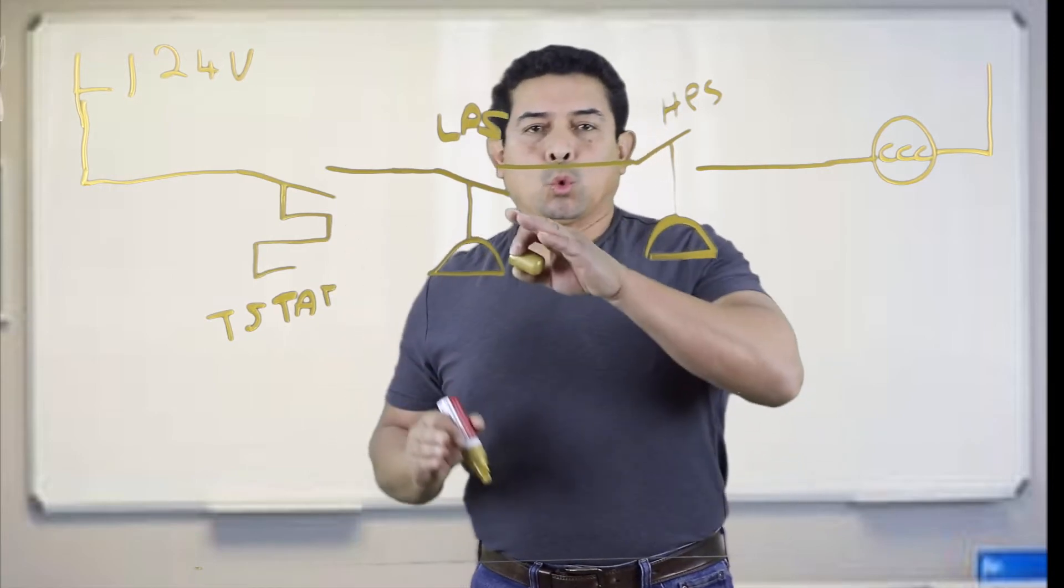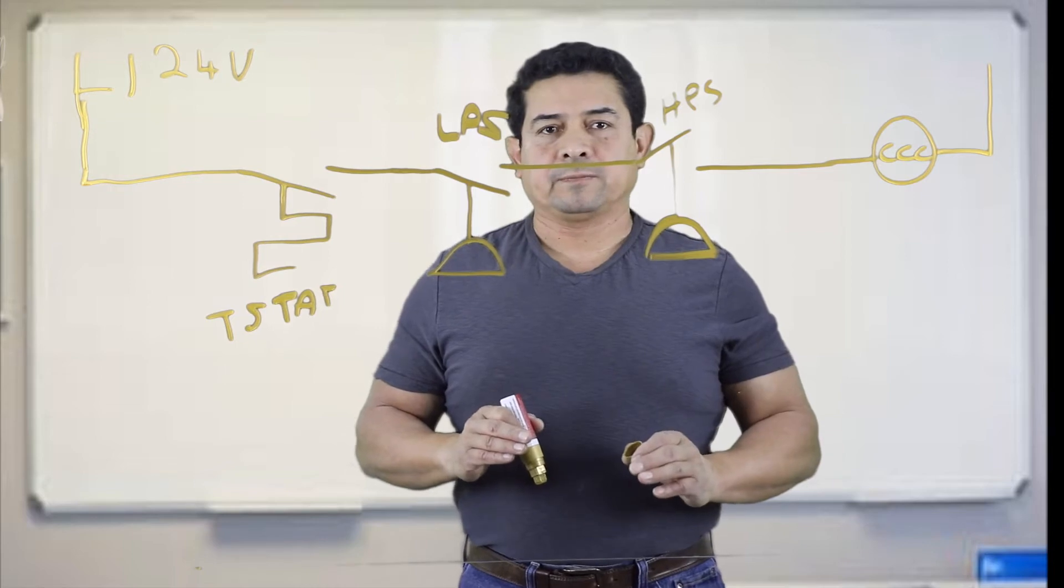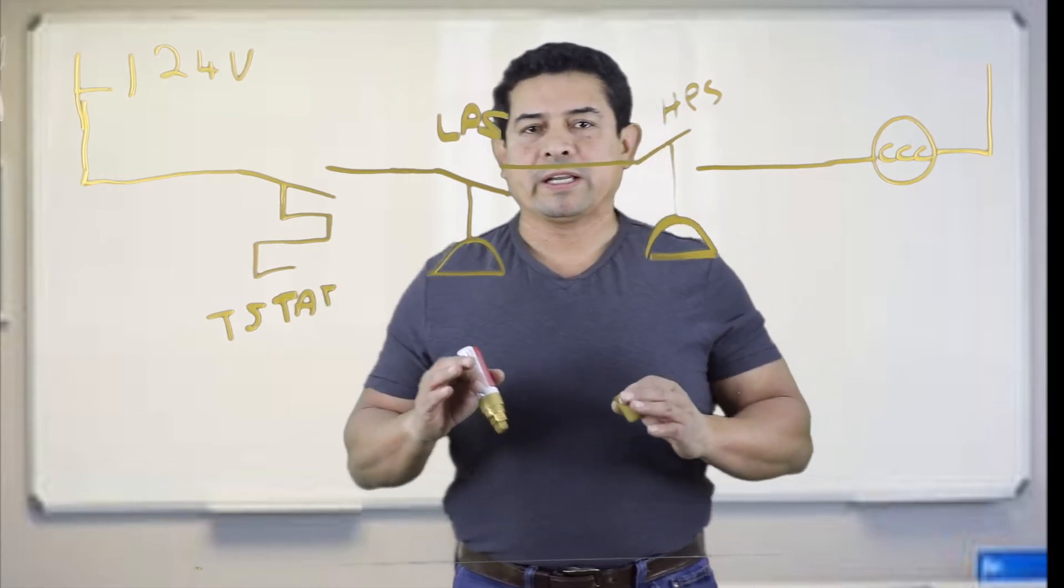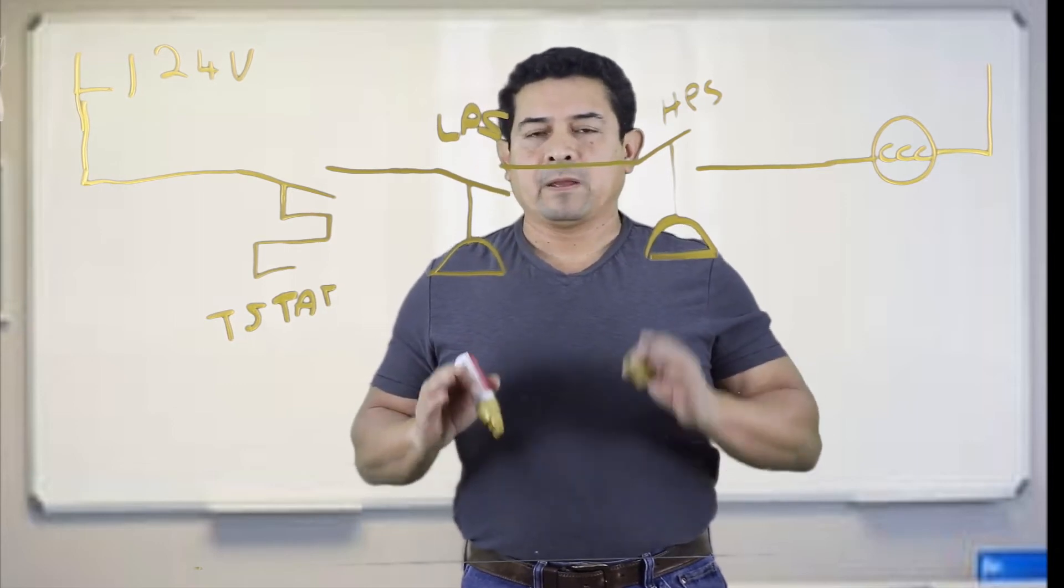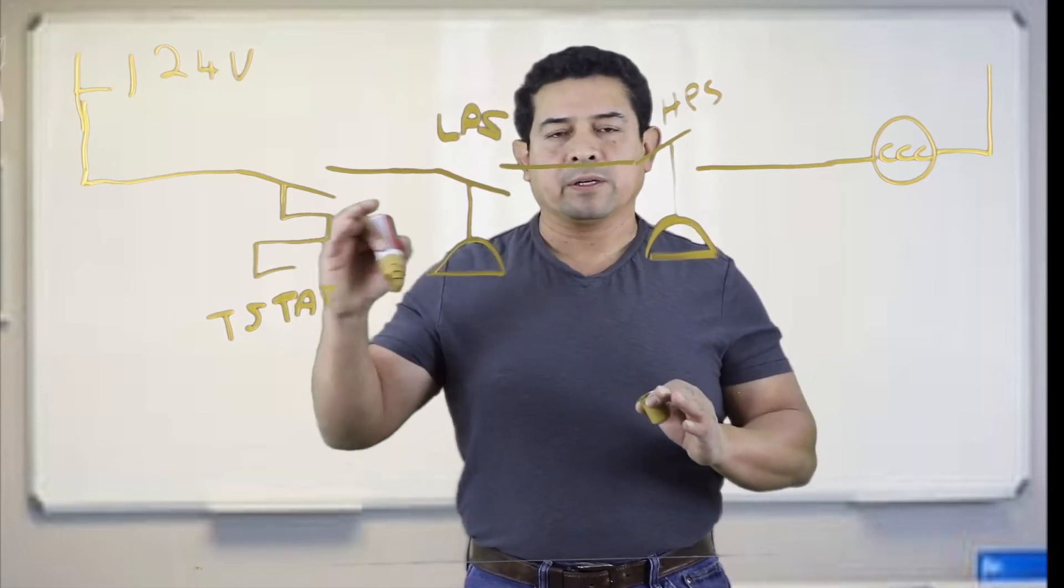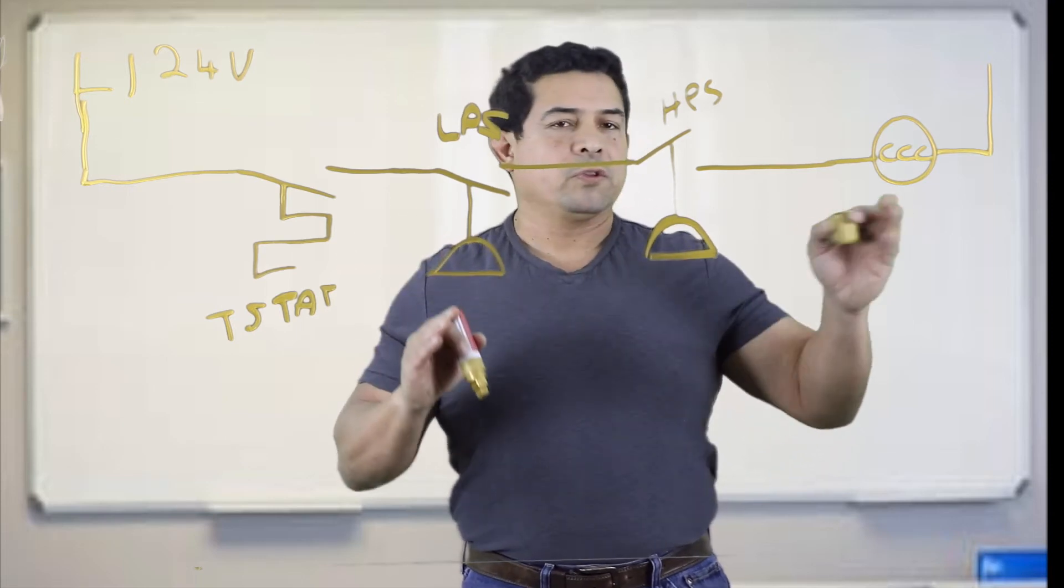OR circuit, because this one, OR this one, OR this one can shut that off. So depending on how you're looking at it, this could be an AND, or it could be an OR circuit. But the most important thing is that they are in series, and all of these have to be closed for this to operate.